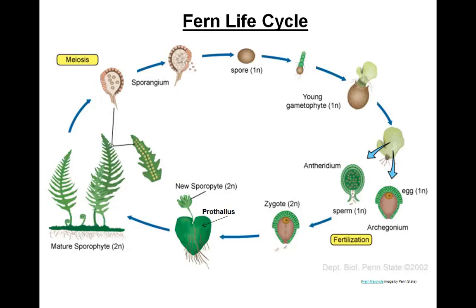The life cycle of a fern alternates between a haploid gametophyte stage — the male antheridium and the female archegonium are both located on the same structure known as a prothallus. Sperm and egg, the gametes, are produced in this stage. Fertilization takes place within the female gametophyte, the archegonium, and the diploid sporophyte develops, which is independent of the gametophyte — unlike that seen in the mosses.